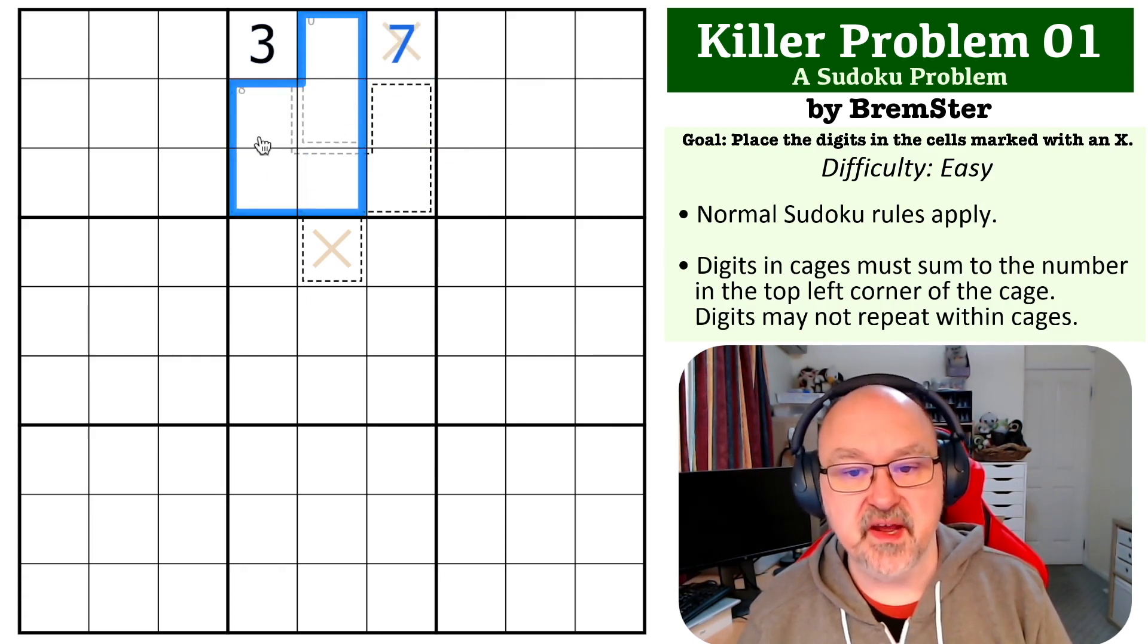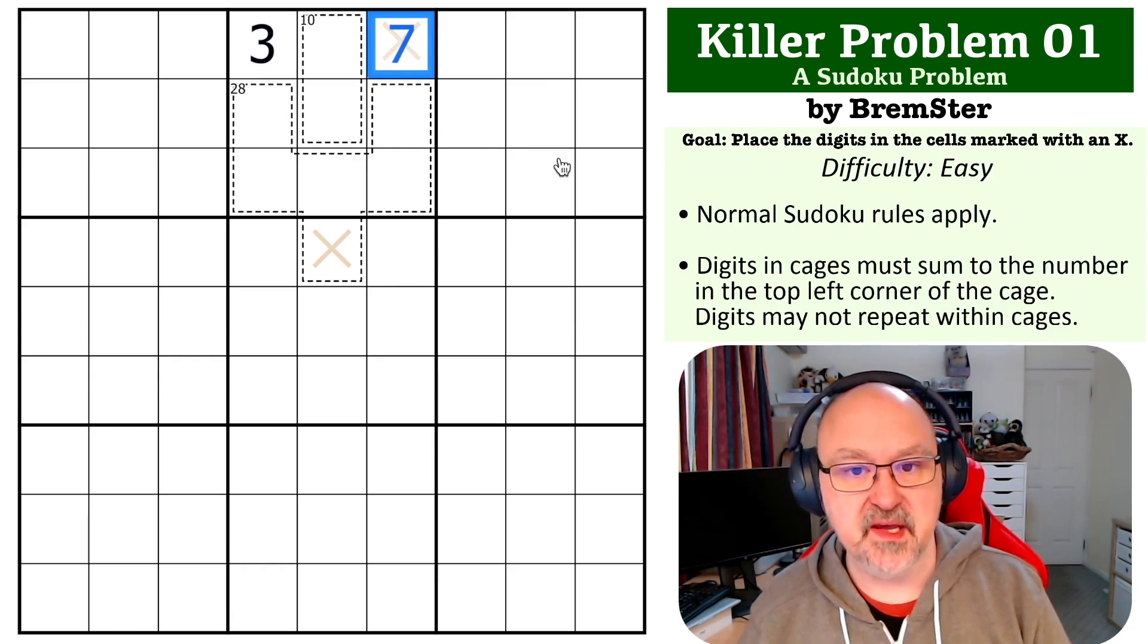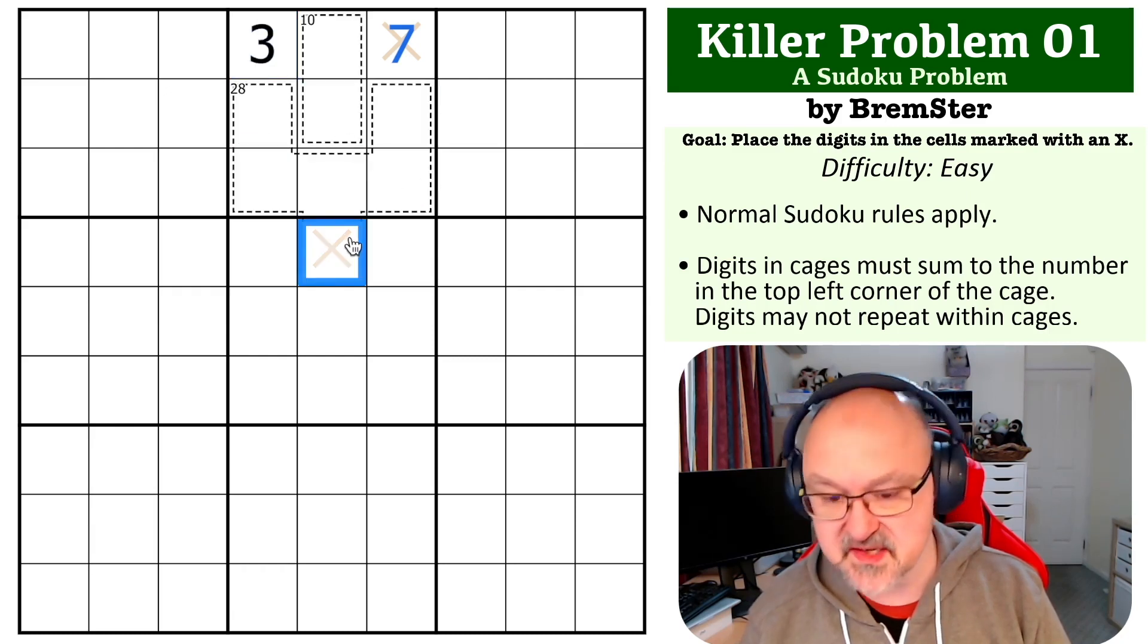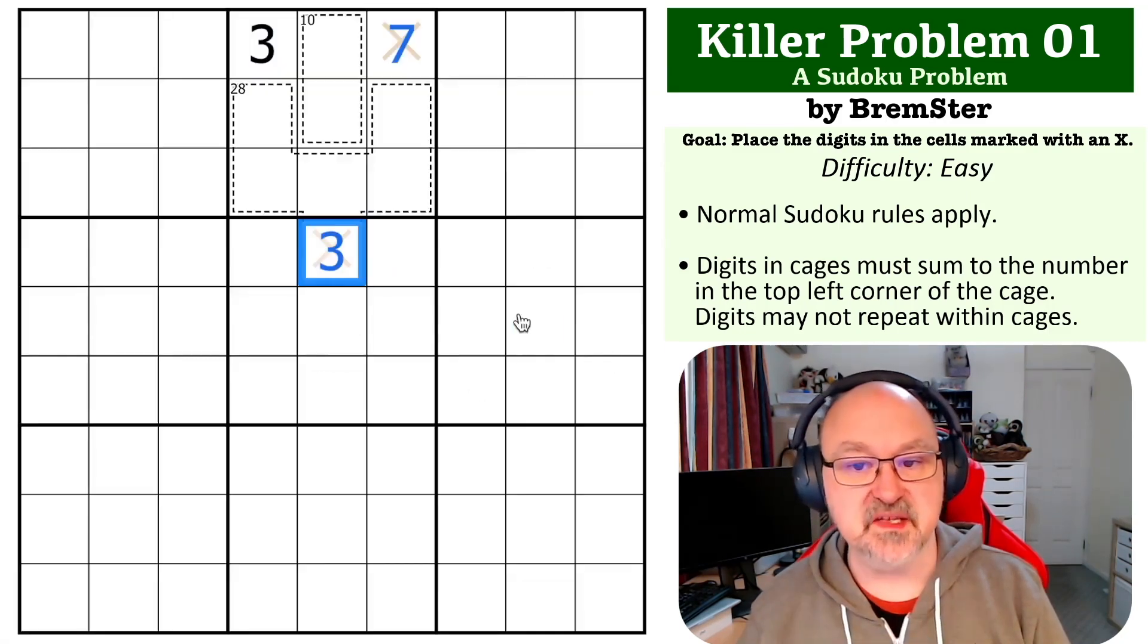Now, in an eight-cell 38 cage, you have to put every digit except a seven, which we've put here. So where can you put the three in this cage? The only place you can put it because you can't put it in any of these cells because there's already a three in the box is here and that completes the problem.